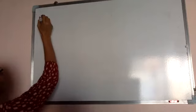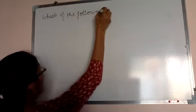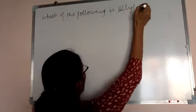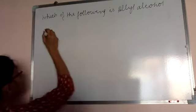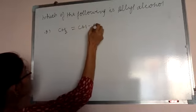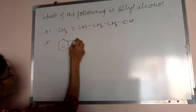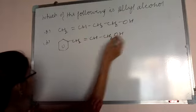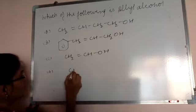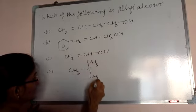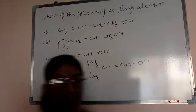Next question: which of the following is allylic alcohol? Options: first is CH2=CH-CH2-CH2OH; second is CH2=CH-CH2OH; third is CH2=CH-OH; and fourth is CH3-CH=CH-OH. Which of the following is allylic alcohol?